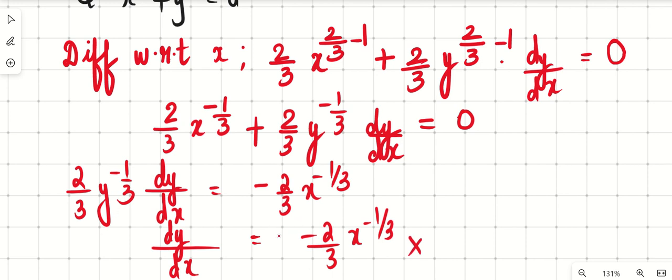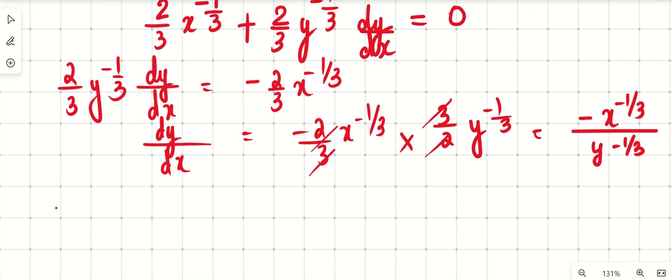When it comes here it will become division. The division will become we will take reciprocal and make it multiplication. So 3 by 2 y raised to minus 1 by 3, so this will get cancelled and minus x raised to minus 1 by 3 by y raised to minus 1 by 3, this is what we are left with.